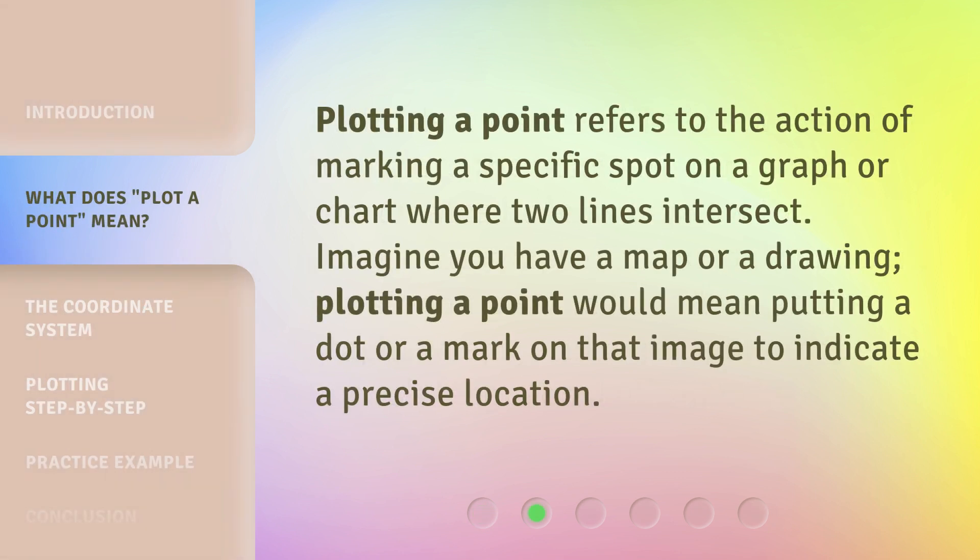Plotting a point refers to the action of marking a specific spot on a graph or chart where two lines intersect. Imagine you have a map or a drawing. Plotting a point would mean putting a dot or a mark on that image to indicate a precise location.